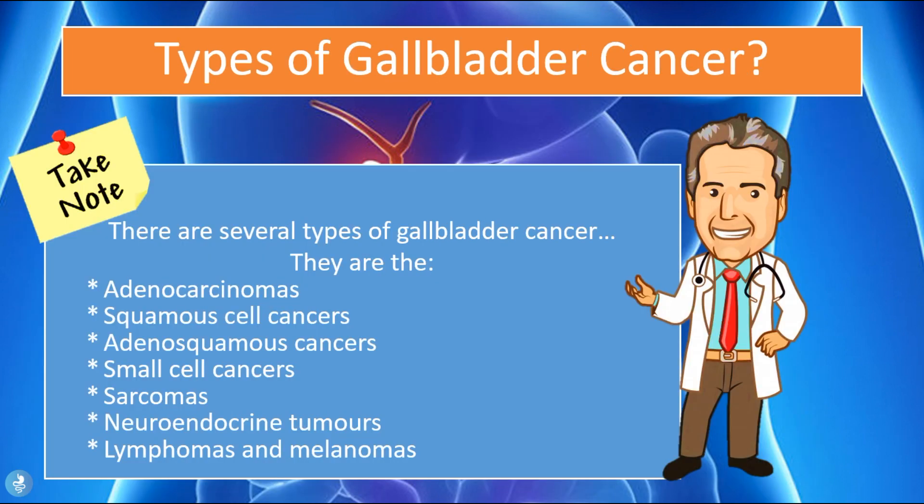Now let's explore the types of gallbladder cancer. There are several types: adenocarcinomas, squamous cell cancers, adenosquamous cancers, small cell cancers, sarcomas, neuroendocrine tumors, and lymphomas and melanomas. Let's explore each of these further.